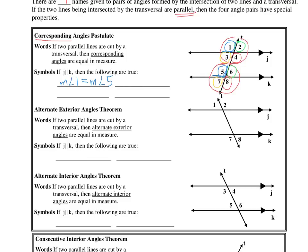Continuing with corresponding angles: measurement of angle two equals measurement of angle six, measurement of angle three equals measurement of angle seven, and measurement of angle four equals measurement of angle eight. Those are corresponding angles — they share the same position.